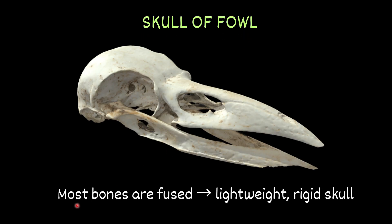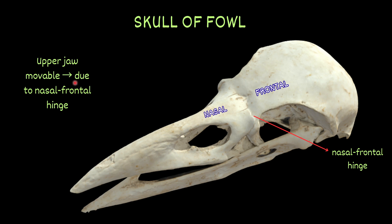For the skull of the owl: most of the bones are fused so that the skull becomes very light in weight and rigid in nature. The upper jaw is movable due to the presence of the nasofrontal hinge, located between the frontal bone and the nasal bone, allowing the upper jaw to move.